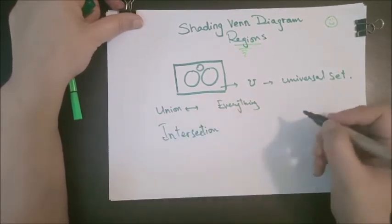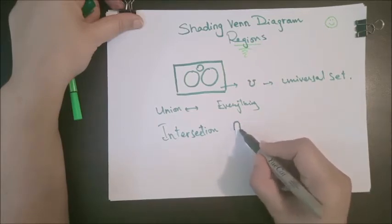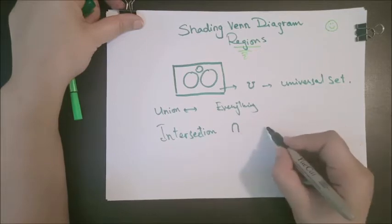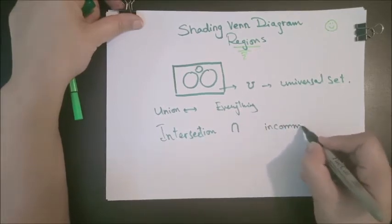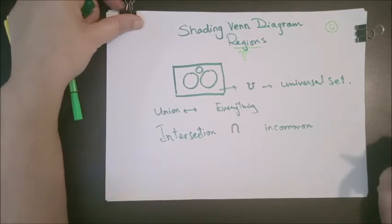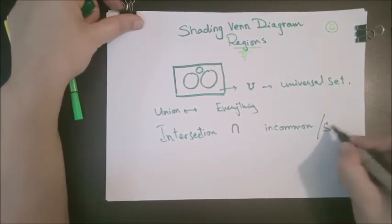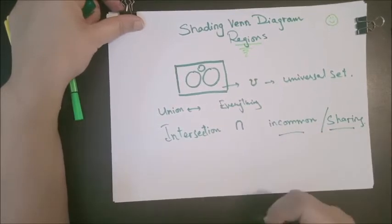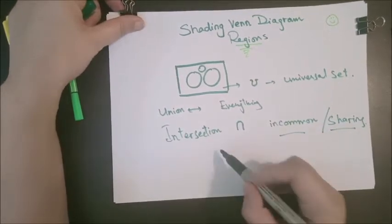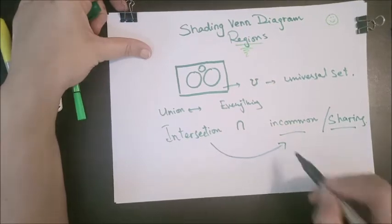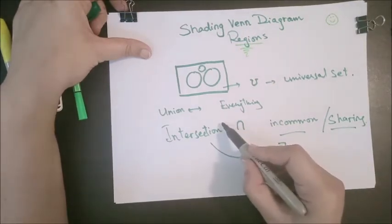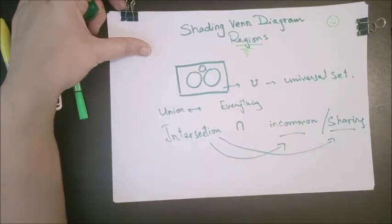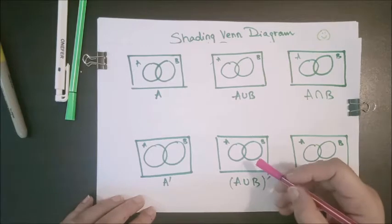What is intersection? Intersection is denoted by the ∩ sign, and intersection means what is in common between two sets or three sets — whatever two sets are sharing. Intersection is related to whatever is common between them, or whatever they are sharing.